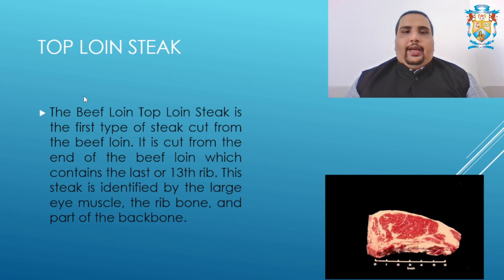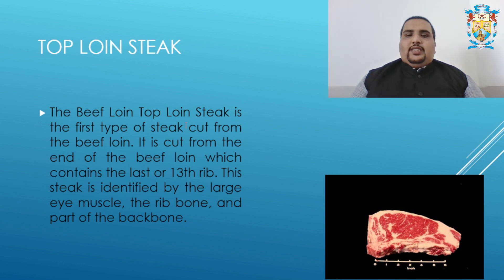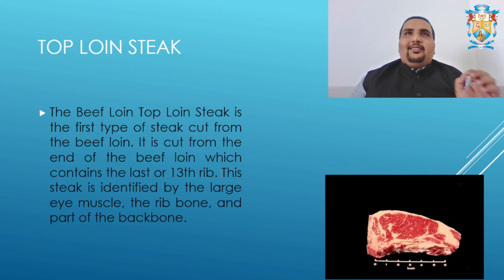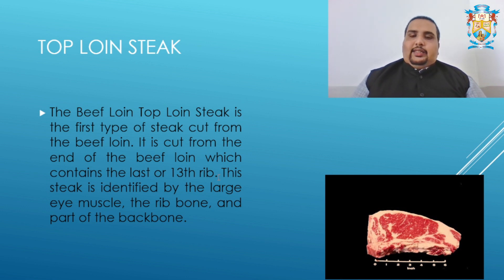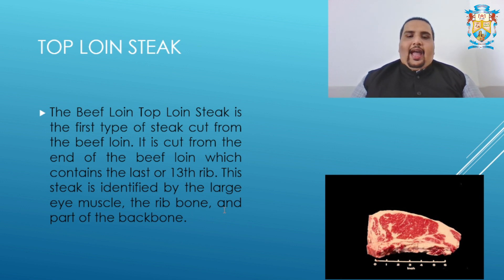Let's see the different steaks available in the loin. The first is the top loin steak. The beef loin top loin steak is cut from the end of the beef loin, which contains the last or 13th rib. This steak is identified by the large eye muscle, the rib bone, and part of the backbone, as you can see in the picture.